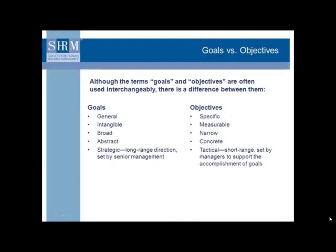Often we have a question: what is the difference between goals and objectives? Goals are in general terms but objectives are specific. Goals are intangible but objectives are measurable. Goals are of broad type, objectives are narrow. Goals are abstract, objectives are concrete. Goals are strategic, long-range directions set by senior management, but objectives are tactical, short-range, set by managers to support the accomplishment of the goals.